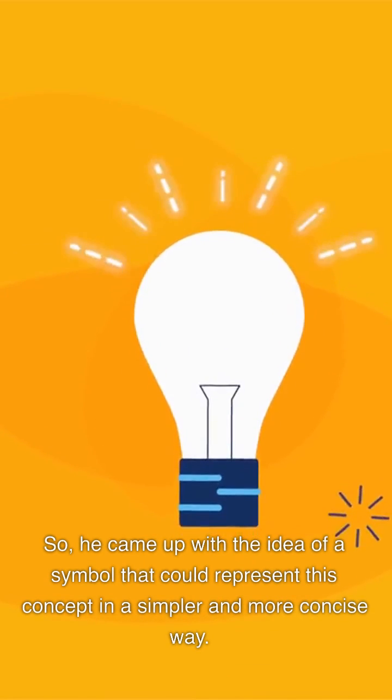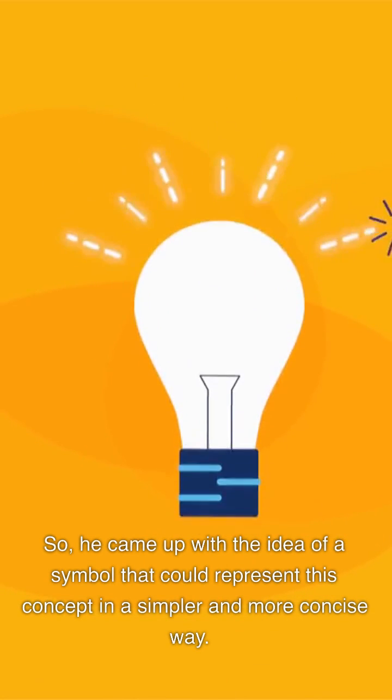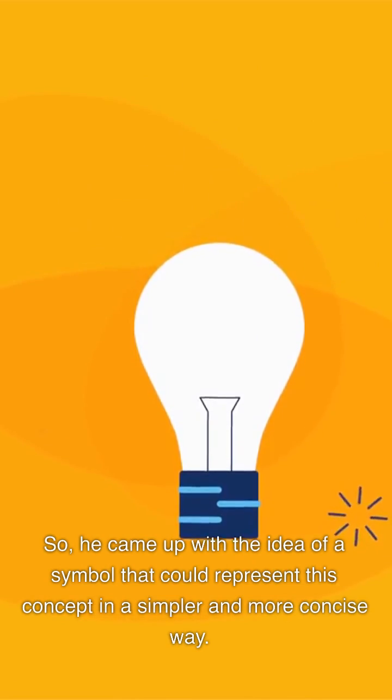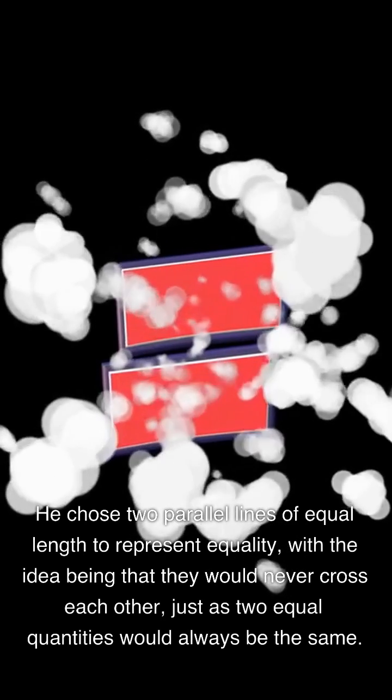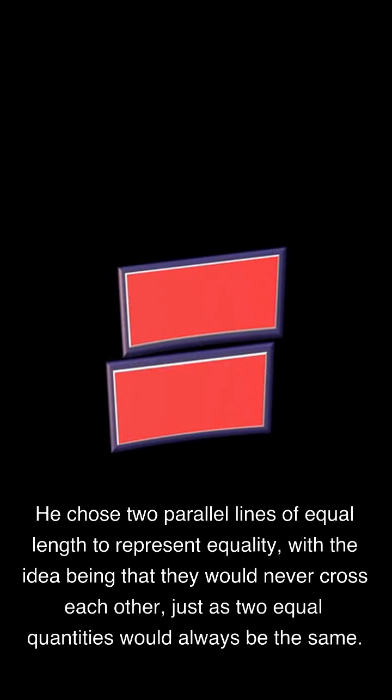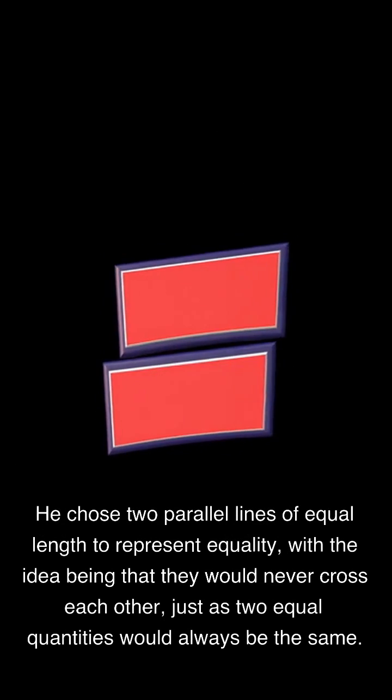So, he came up with the idea of a symbol that could represent this concept in a simpler and more concise way. He chose two parallel lines of equal length to represent equality, with the idea being that they would never cross each other, just as two equal quantities would always be the same.